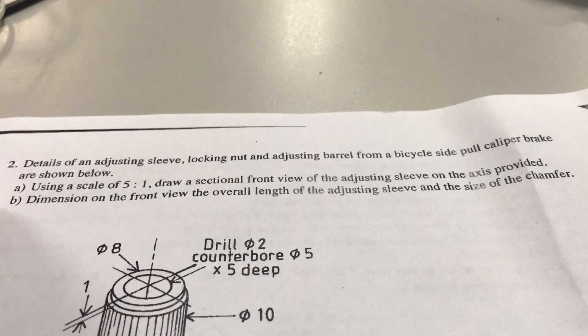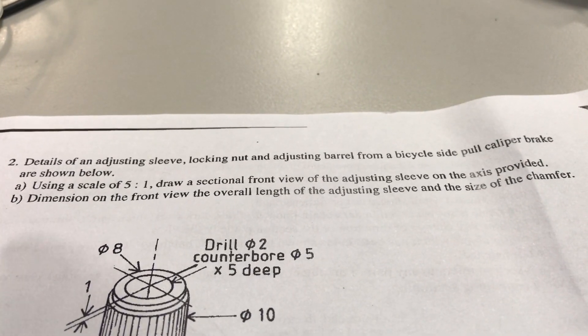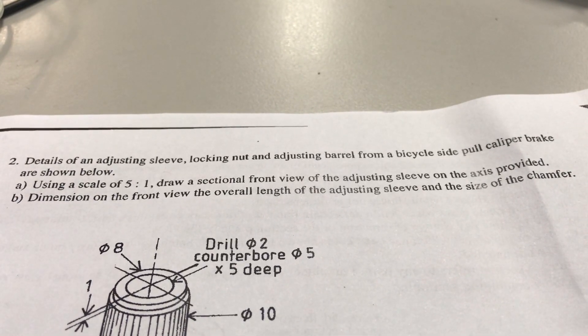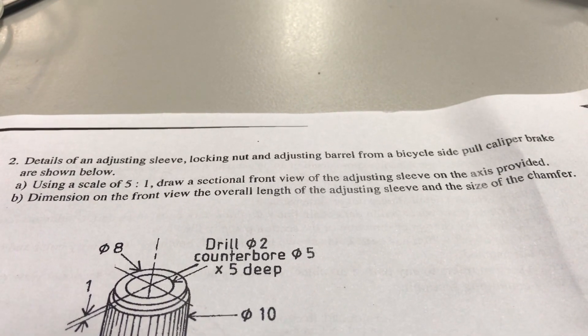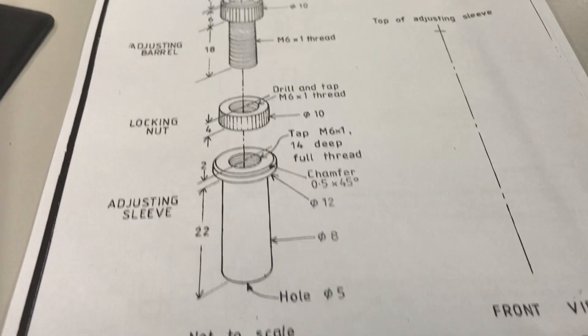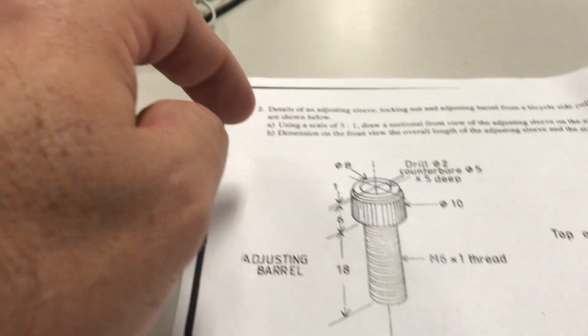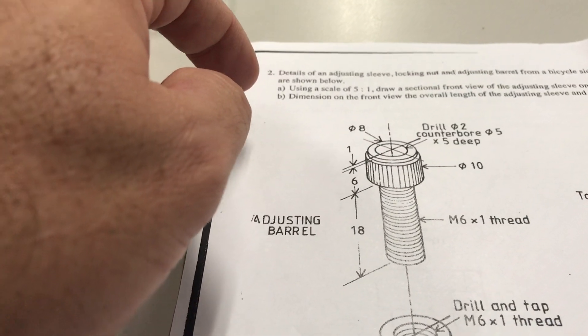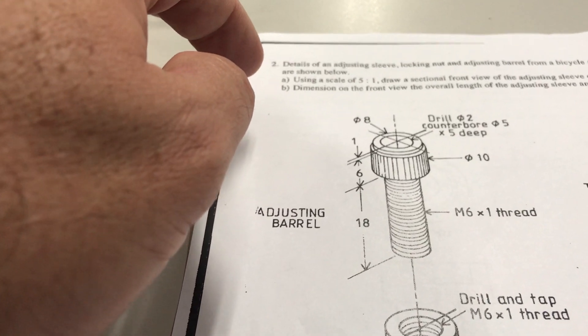Okay, the question is asking: using a scale of 5 to 1, draw a sectional front view of the adjusting sleeve on the axis provided. And we can see that the actual axis provided is here. It's quite a long axis compared to the actual part that we're going to be working on. And dimensions on the front view: the overall length of the adjusting sleeve and the size of the chamfer.